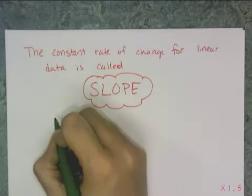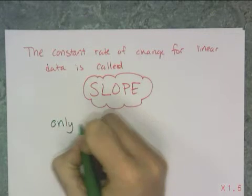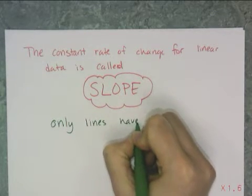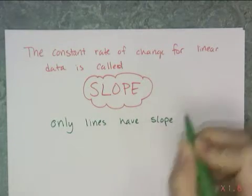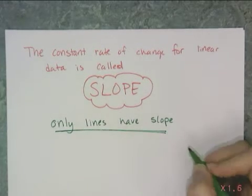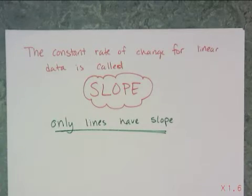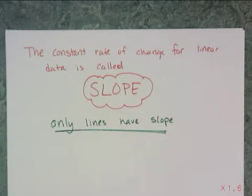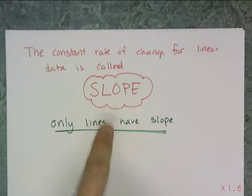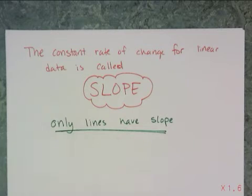Here's the big deal: only lines have slope. Everything has a rate of change, but only lines have slope. Never talk about the slope of a parabola, because parabolas don't have slopes. Slope is a specific word for the rate of change of a linear function.